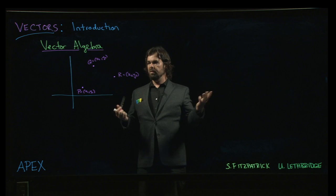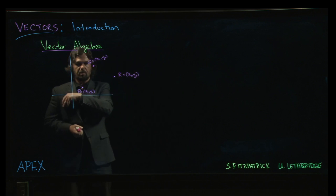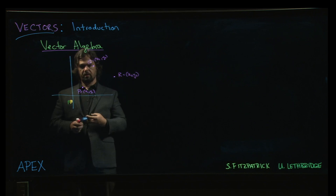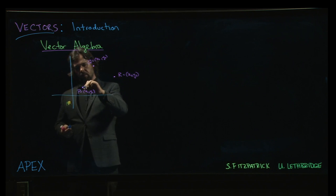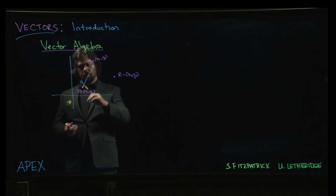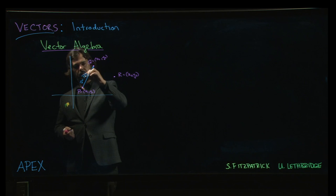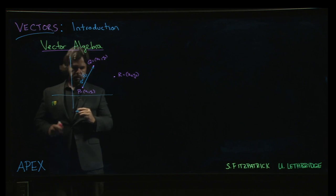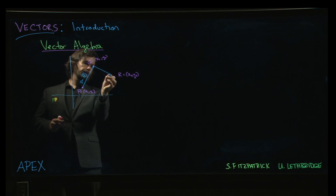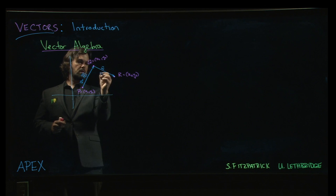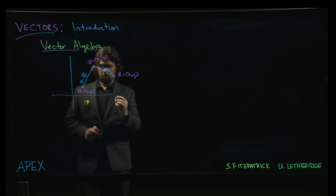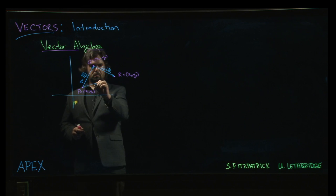Now there are three vectors I can form, up to direction, because I can always reverse the direction of the vectors. Let's do this vector V, the vector PQ. And we'll do the vector W, which is QR. And we also could draw this vector U, the vector PR.